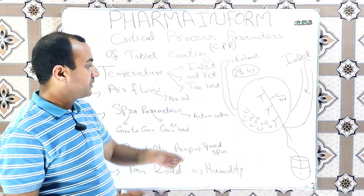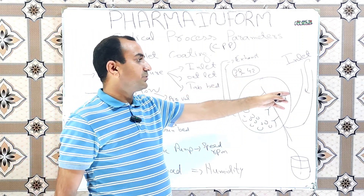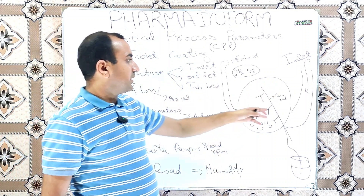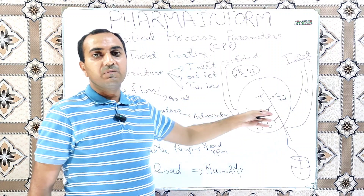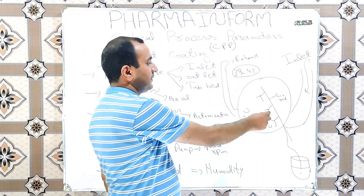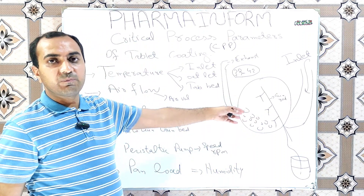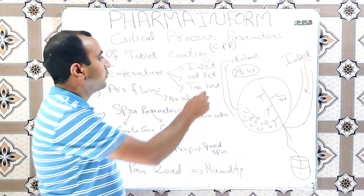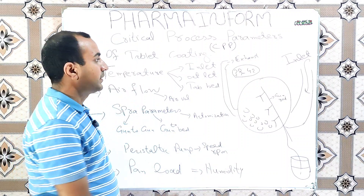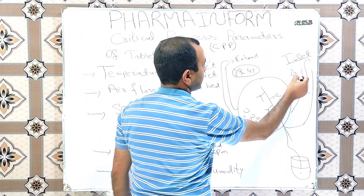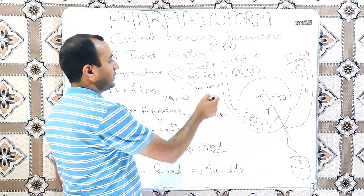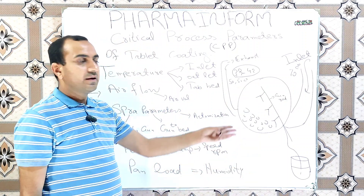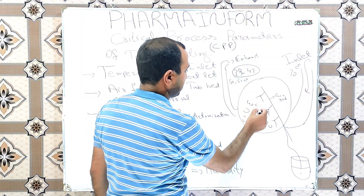Tablet inlet temperature should be synchronized with the spraying pattern. Outlet air temperature is basically always less than the inlet air temperature, because when inlet air comes inside it gives its heat to the tablets and it is used for evaporation of solvent. After utilization of heat, when it goes outside its temperature is decreased. So if inlet air temperature is 70 degrees centigrade, outlet air temperature may be around 50 to 52 degrees centigrade, and our tablet bed temperature must be 40 degrees centigrade.